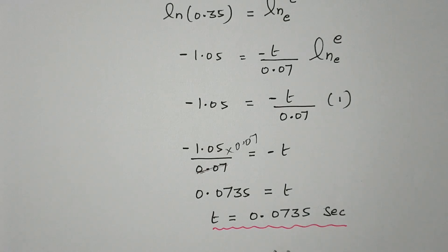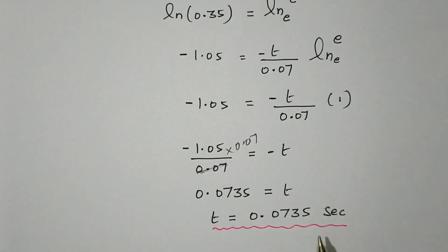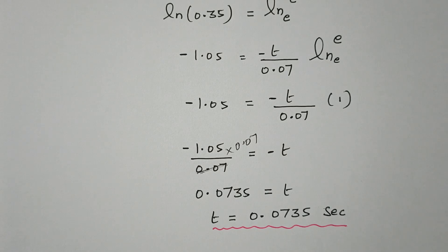So the time taken to reach 25 milliampere is 0.0735 seconds. In this video we discussed the DC transient response of an RC circuit and calculated the time taken for the current from the source to reach 25 milliampere.